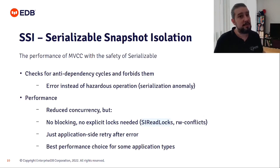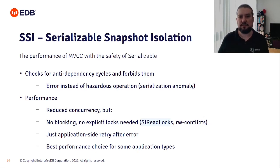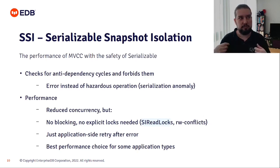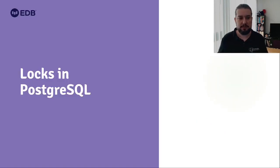With SSI you don't get explicit blocking or explicit locks — instead you get SI read locks and read-write conflicts. For some application types, getting an application-side error is the best performance choice: you send things to the database all the time, and if something fails you retry immediately instead of waiting. Your application doesn't have to wait at all.